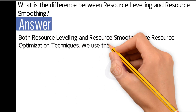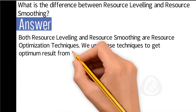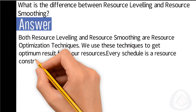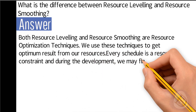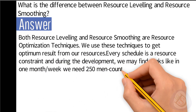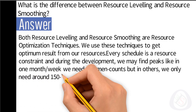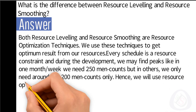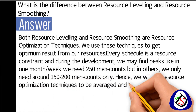Every schedule is resource-constrained, and during development we may find peaks. For example, in one month or week we may need 250 man-counts, but in others we only need around 150 to 200 man-counts. Hence we use resource optimization techniques to average out and get a smooth graph.